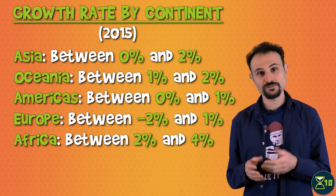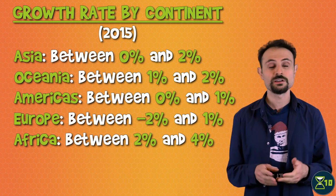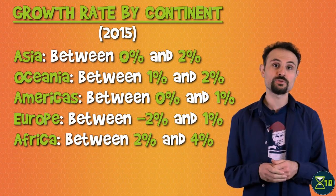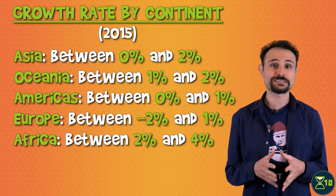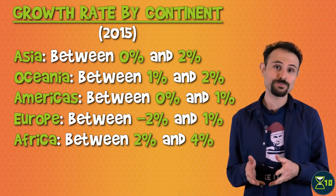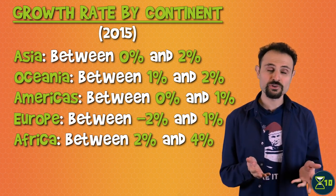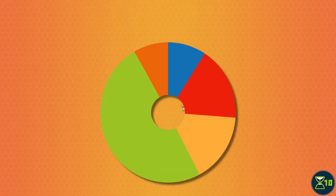With the exception of Africa, the growth rate of individual continents isn't especially high either. In 2015, the growth rate of most regions of Asia was between 0 and 2%. In Oceania, it was between 1 and 2%. In North and South America, it was between 0 and 1%. And in Europe, it was between negative 2% and 1%, which means that in some regions of Europe, population was shrinking, not growing.